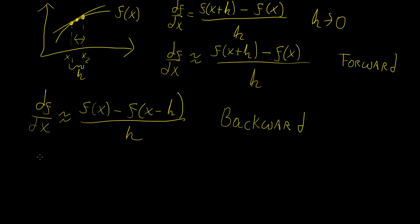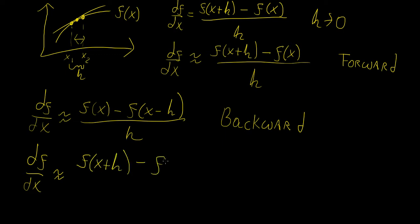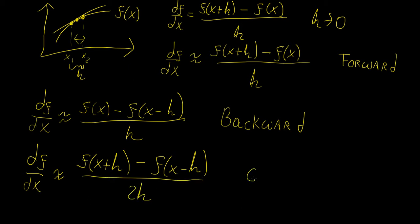There is another one worth mentioning: the central difference scheme, which has much higher accuracy. Instead of taking two consecutive points, we take two points centered around the central point: f of x plus h minus f of x minus h. Because the spacing has now become 2h, that becomes the new denominator. So we have a forward difference, a backward difference, and a central difference scheme.